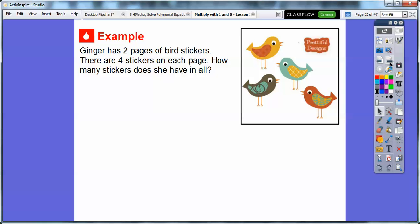Here's another problem. Ginger has two pages of bird stickers. Here's one page, but she has two pages. There are four stickers on each page. How many stickers does she have at all? Well, we know four plus four equals eight. Or we can think, there's two pages, two pages of four stickers. Two times four is also going to equal eight. Two groups of four equals eight. Remember, four plus four is eight. So Ginger has eight stickers. Two times four equals eight.